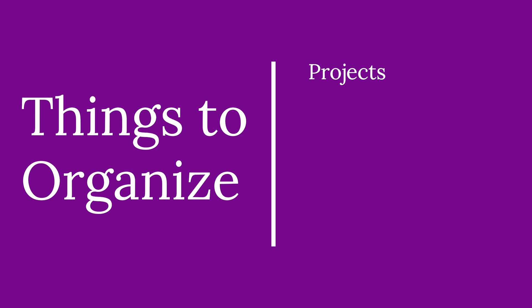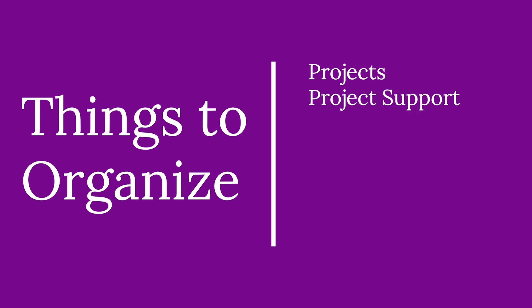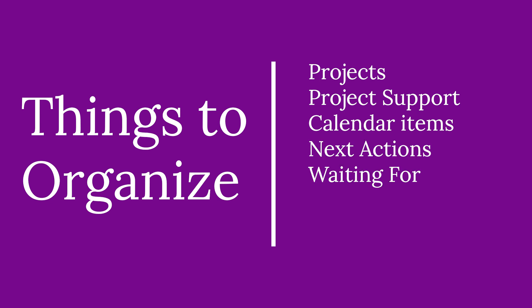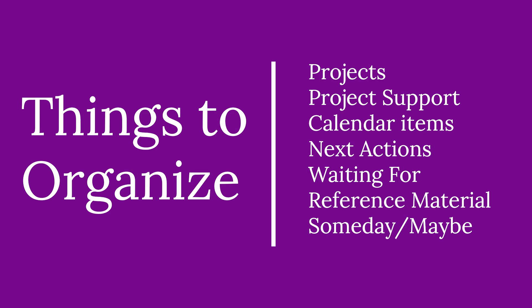The GTD book outlines seven different types of items that you'll likely need to organize. The seven things are: a list of projects, project support material, scheduled actions on your calendar and information to support those, a list of next actions, a list of things you're waiting for, reference material, and a list of things you'd like to do someday maybe.